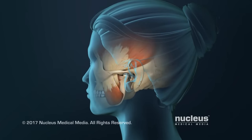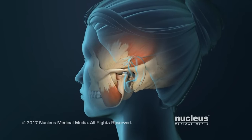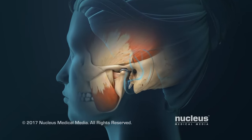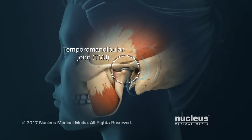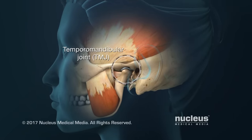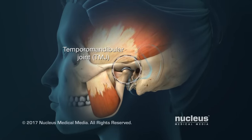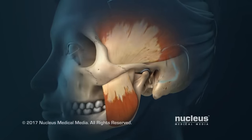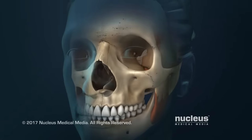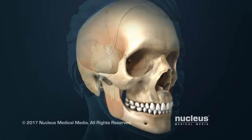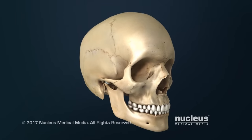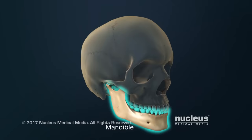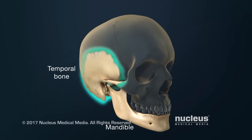TMJ disorders are problems with your jaw joint and chewing muscles. The temporomandibular joint, or TMJ, is where your lower jaw meets your skull. You have two temporomandibular joints, one in front of each ear. Each joint connects your lower jaw bone, called the mandible, to the temporal bones of your skull.